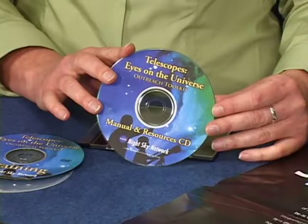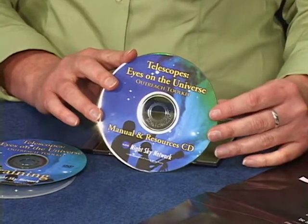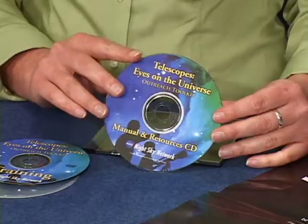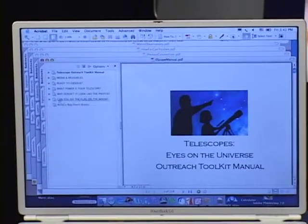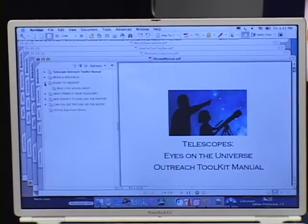The toolkit manual on the manual and resources CD - insert this into your computer and click on Scope Manual PDF. This has all the suggested scripts, masters for cards, materials lists, and background information for each activity on the manual and resources CD.